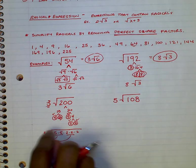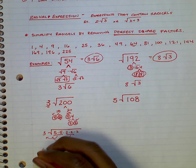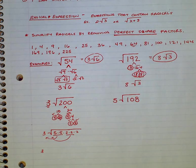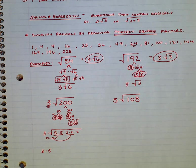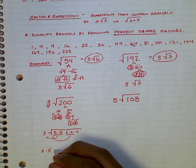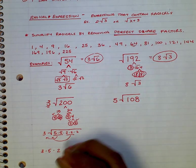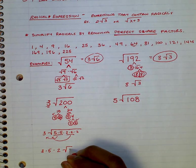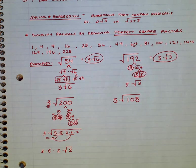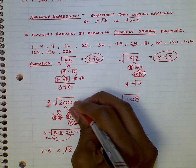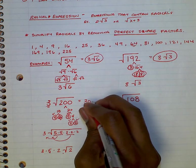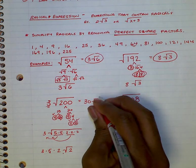So outside of my radical, I have the 3 that we started the problem off with. I have the pair of 5s that we took out. And I have the pair of 2s that we took out. And inside, it's a 2. And since all these numbers are outside, I do 3 times 5, which is 15, times 2, which is 30. So I have 30 radical 2. And that's my final answer.